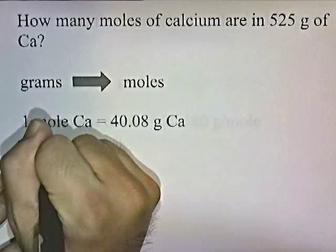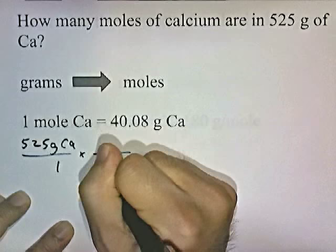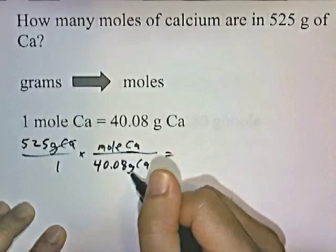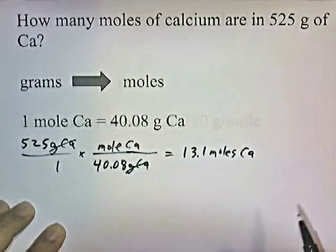5.25 grams of calcium over 1. I'm trying to convert grams into moles. I have grams of calcium on top; I want to get rid of it. So I'll put 40.08 grams of calcium on the bottom and a mole of calcium on top. Grams of calcium cancel; we're left with moles of calcium. This gives a rounded answer of 13.1 moles of calcium. So if you have 525 grams of calcium, that's the equivalent of 13.1 moles of calcium.